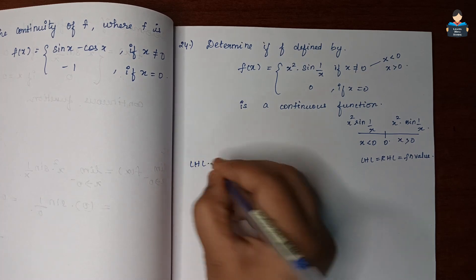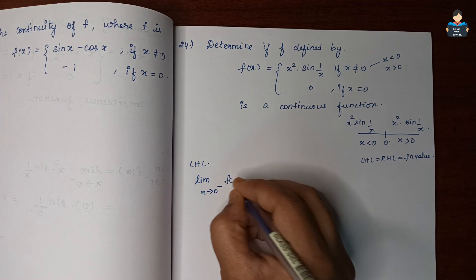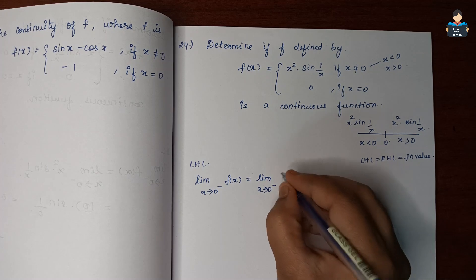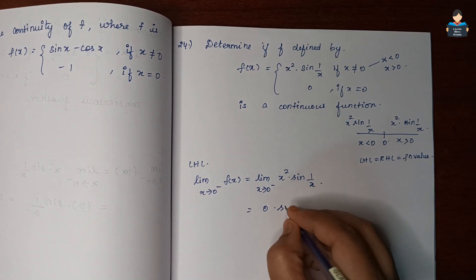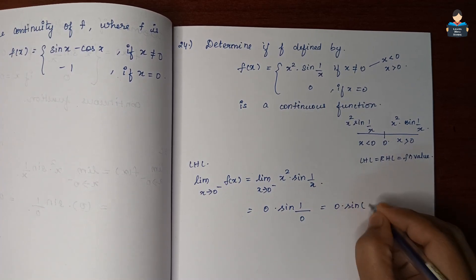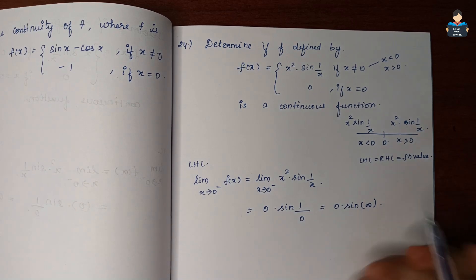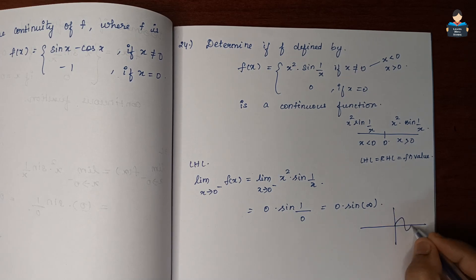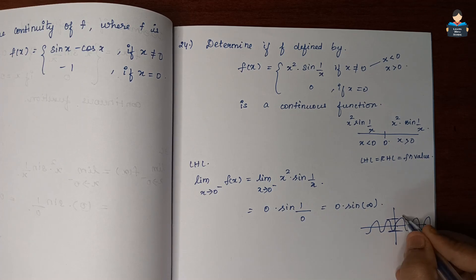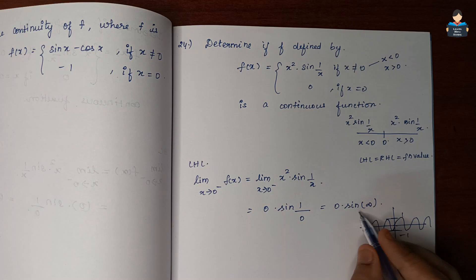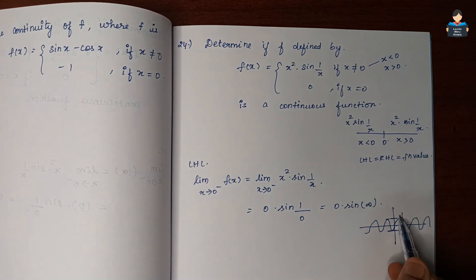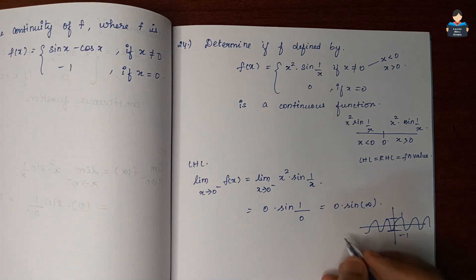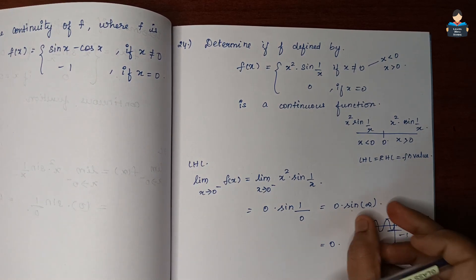Left Hand Limit: limit as x tends to 0⁻ of f(x) = limit as x tends to 0⁻ of x² sin(1/x). Substituting gives 0 × sin(infinity), which is 0 × (some finite value), since sin is always bounded between -1 and 1. So the product is 0. Therefore LHL = 0.